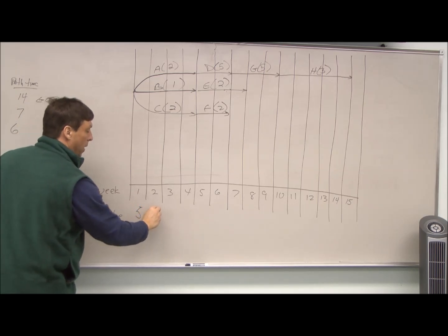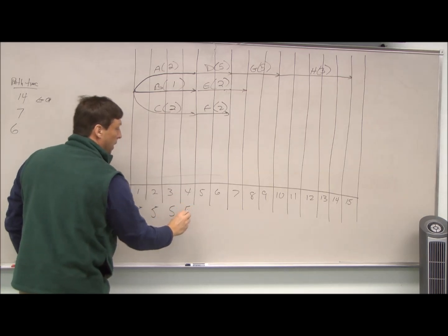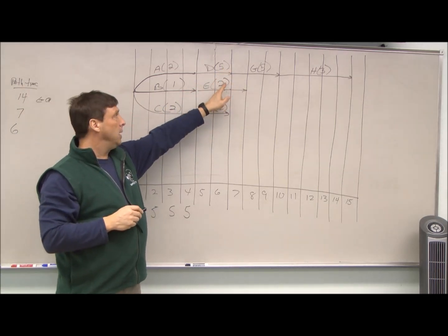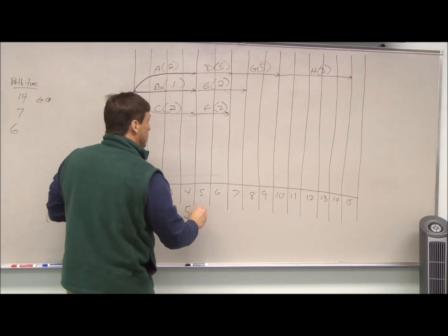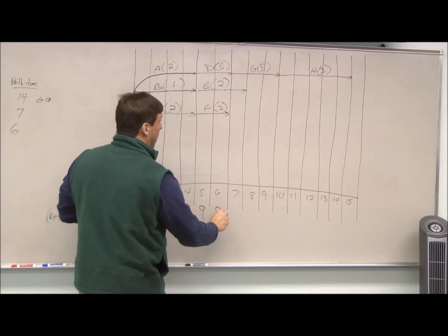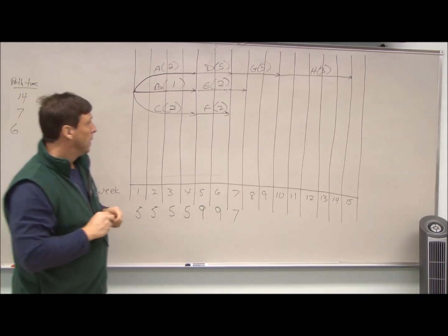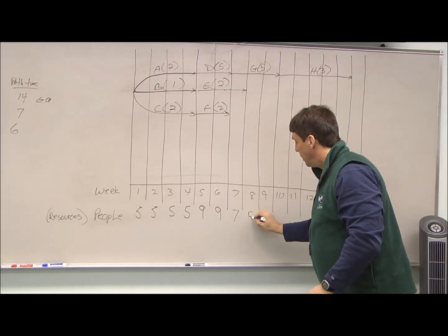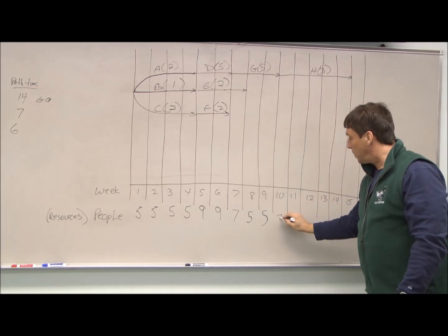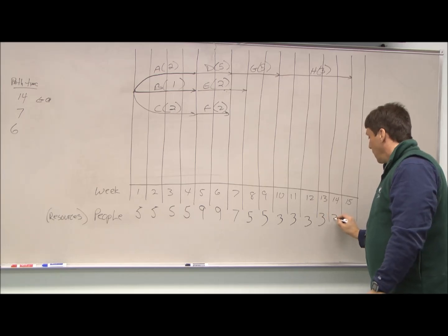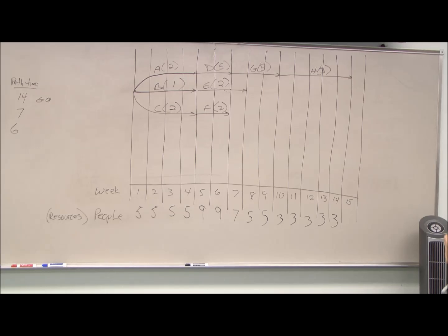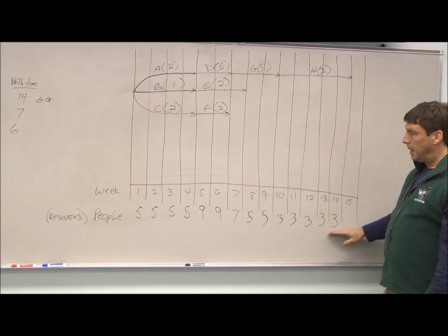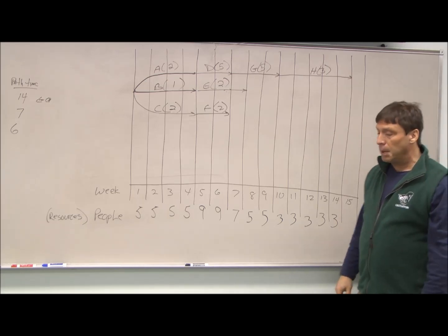Across the first four weeks, we're going to use two resources, one resource, and two resources — so five people in weeks one, two, three, and four. Starting in week five, I'm going to need five people to do D, two to do E, and two to do F — so nine, nine, and then seven once F drops off. Then I'm back into G, which is five, and I finish up with H, which is three. You can see there's quite a difference in people. If we were to schedule this way, I'd have to hire people or have them work overtime just to lay them off at the end, which demotivates people. It's never a good way to do business if you can avoid it.